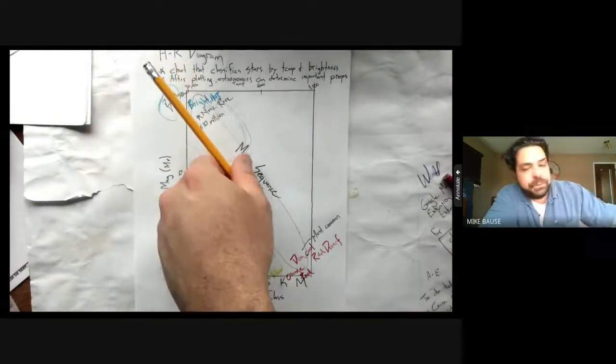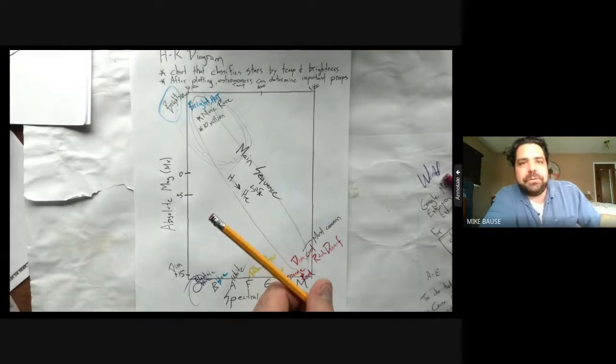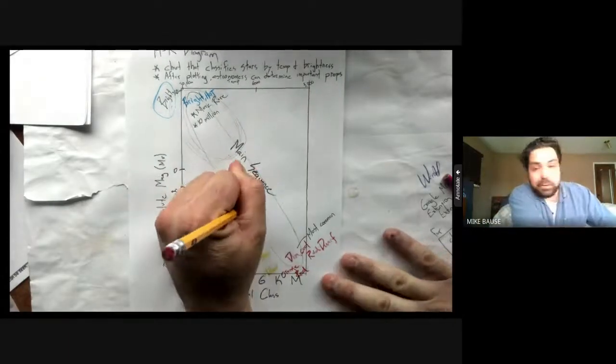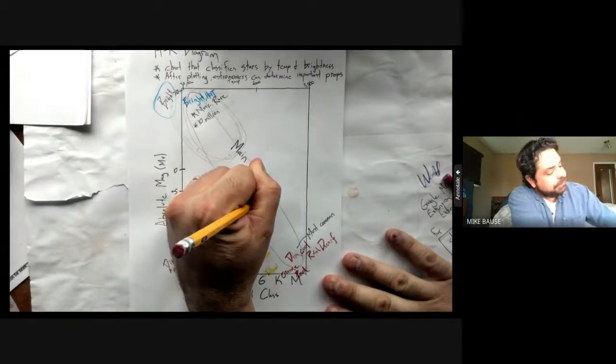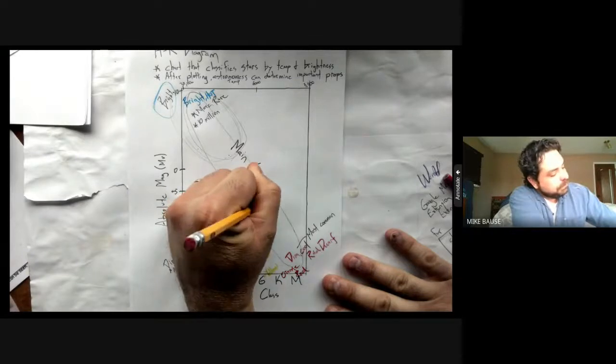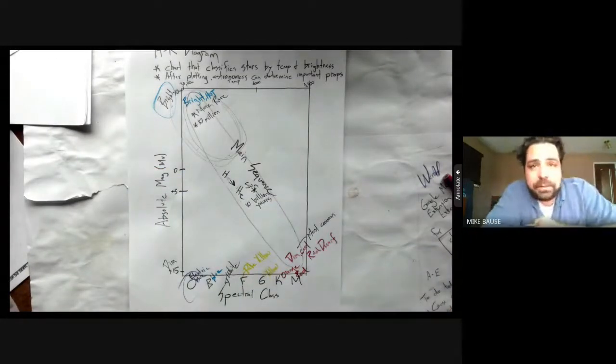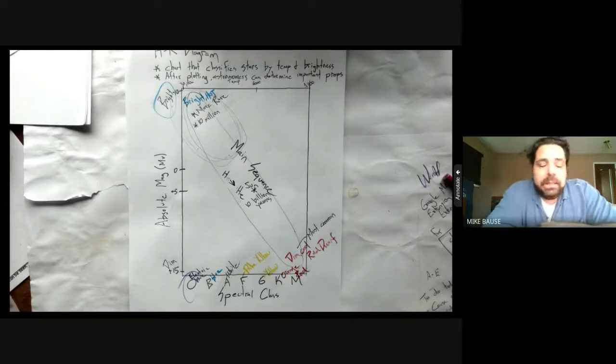As you go down and to the right, the length of time it takes for a star to fuse all of its hydrogen increases. A star like the Sun, right in the middle, is going to take about 10 billion years. That's a long time. We've already talked about how the Sun is halfway through its lifespan. It's burned about 5 billion years of time worth of hydrogen, and it's got about another 5 billion years to go.